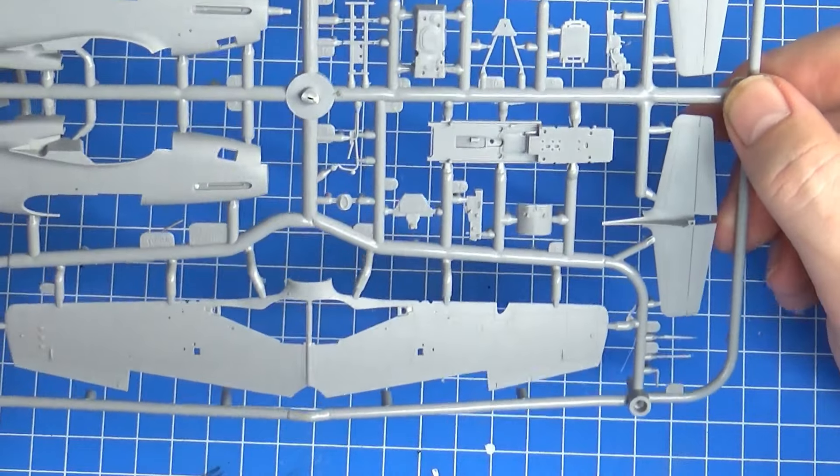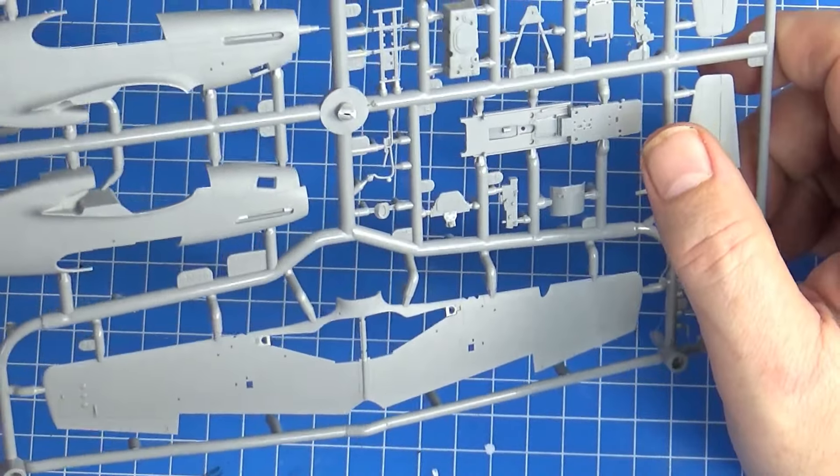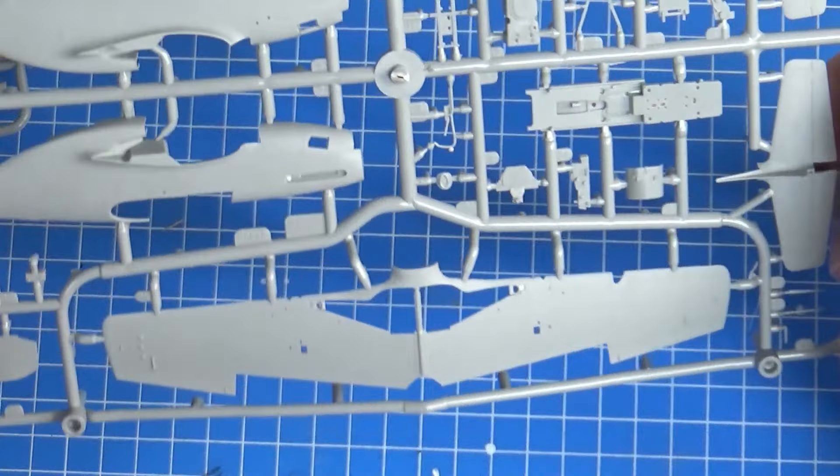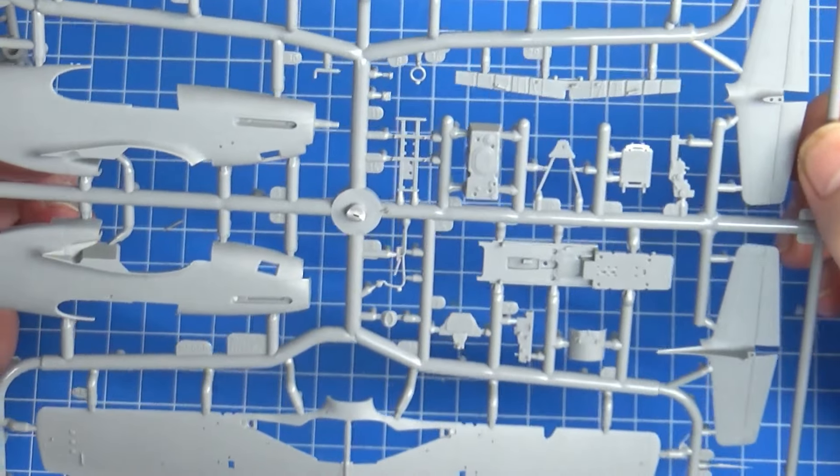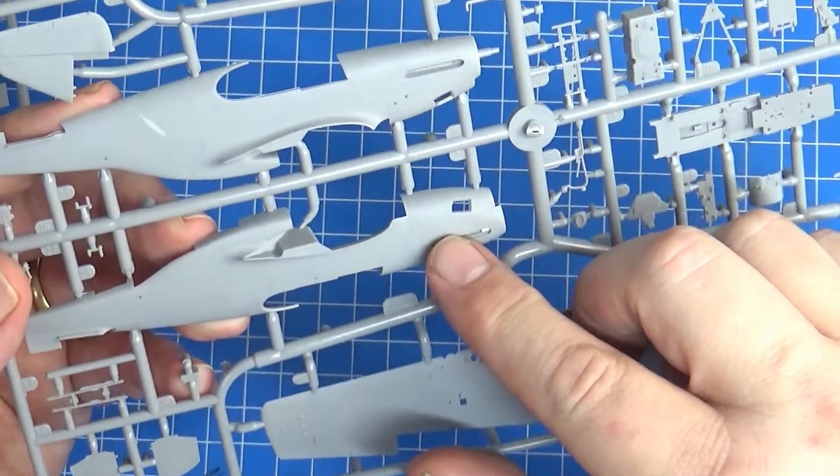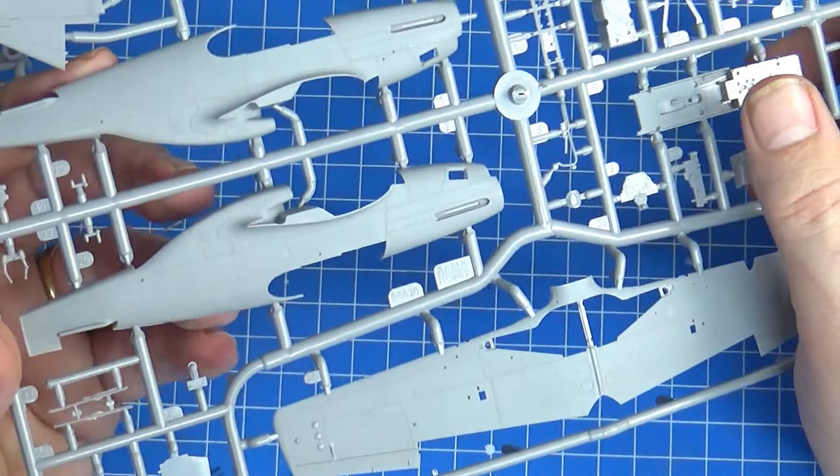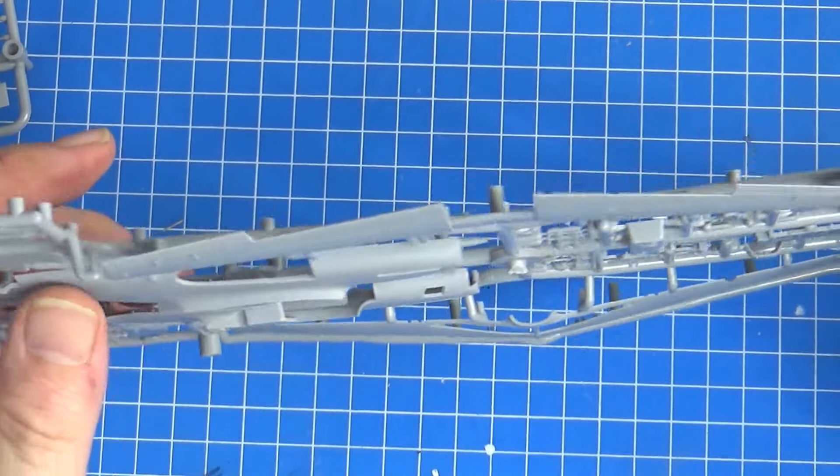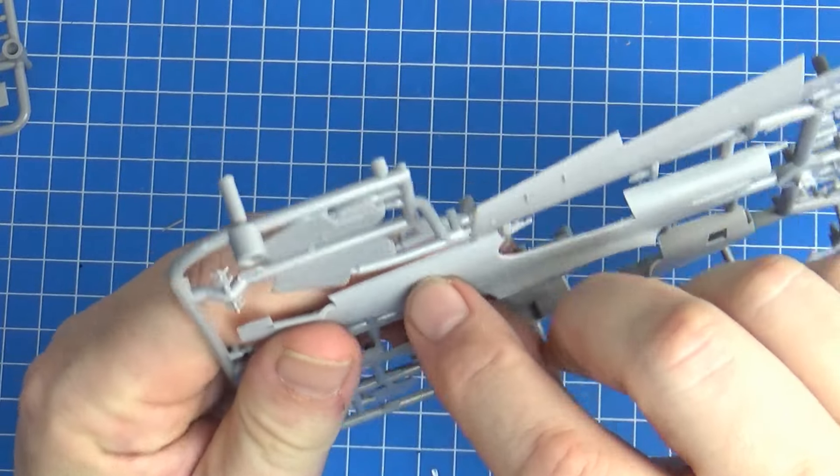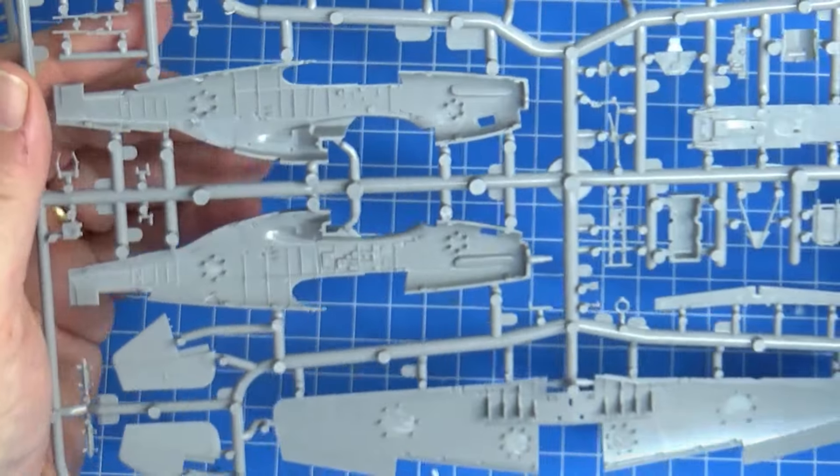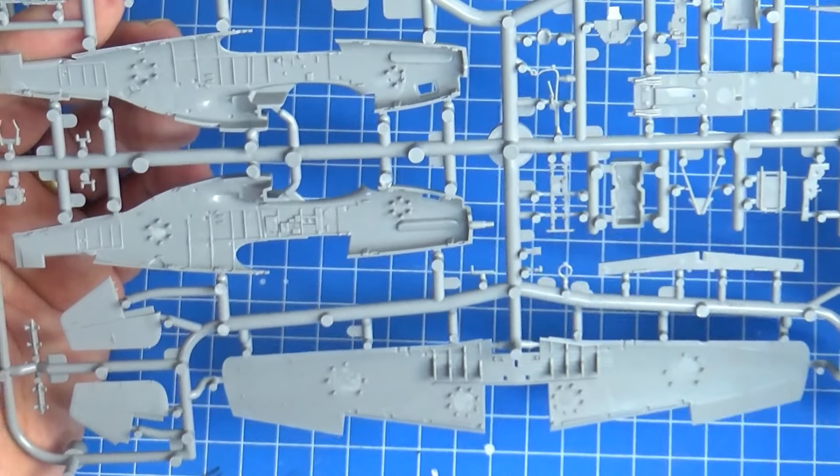Ailerons aren't poseable—they're fixed. That's a shame; I can cut them off, but that's not good enough in my opinion. Even the elevators are molded in—that's a shame too. Is the rudder poseable? No. You can pose your flaps, so you can park the thing on the ground. These kits are made for people who like things parked, not for those of us who like to pose them in flight. Cockpit parts look really good.